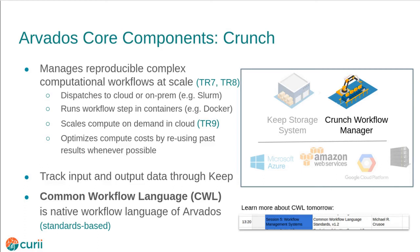Data Commons Technical Requirement 9 is compute resources for cloud-based analysis of data. Requests to run a compute job are submitted through the API. Crunch can easily satisfy the compute request by using the cloud provider's API to request a new compute instance on demand, running the job, and then shutting down the compute instance when it is no longer needed. This allows for scaling up to support huge computations when needed and scaling down to minimize costs.